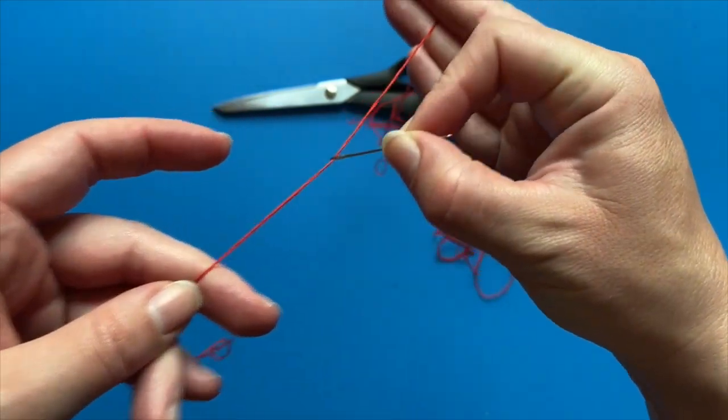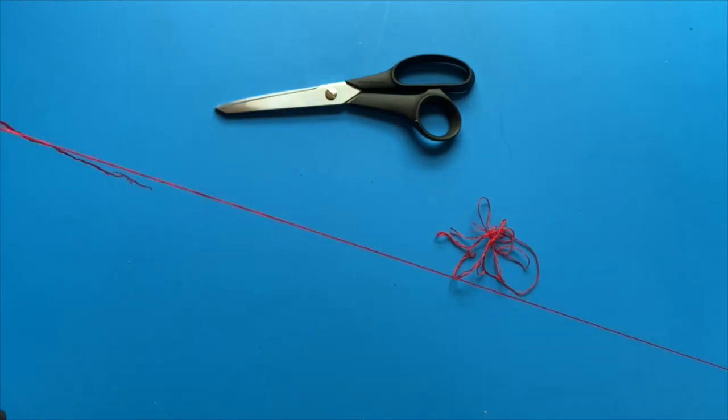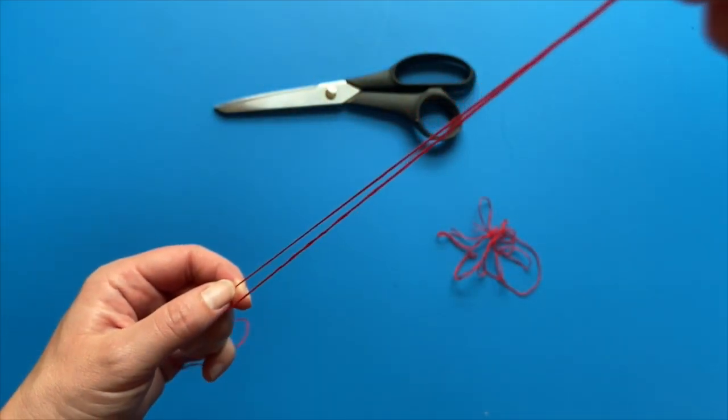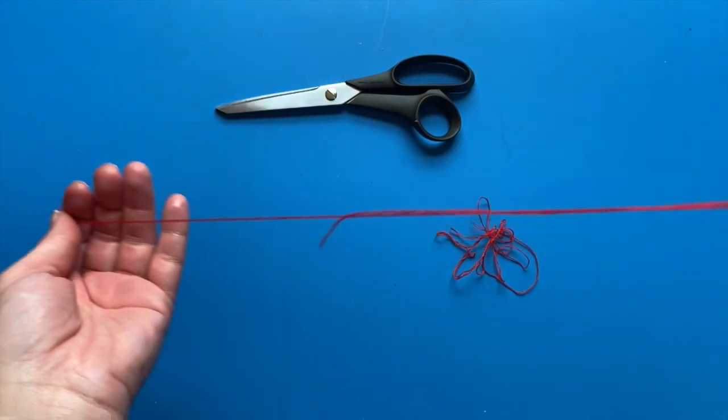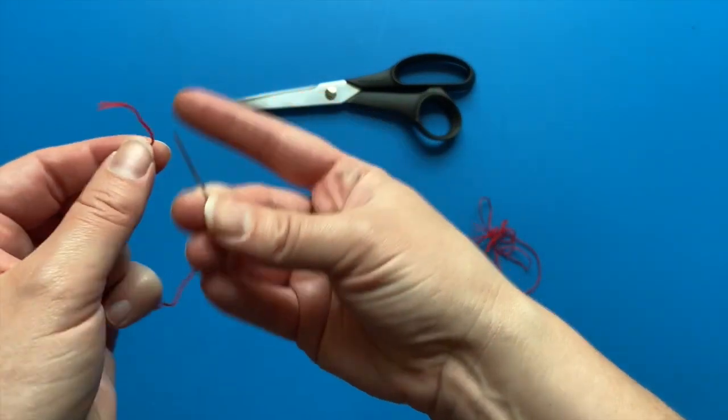Run the thread between your thumbnail and your first finger to help relax it and make for a better sewing process. Every time before you begin to sew a new section, you will need to tie a knot at the end of your thread. Here's how I make a strong sturdy knot.